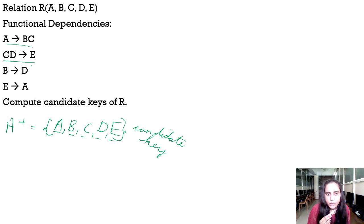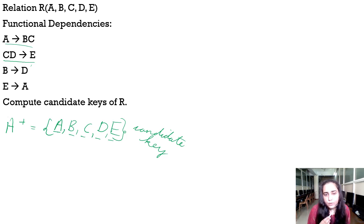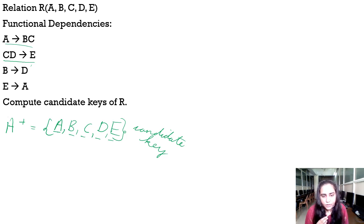When you get a candidate key with a single attribute, you no longer need to compute pairs like A,B+ or A,C+. However, you cannot stop entirely — you still have to calculate B+, C+, D+, and E+ individually to check whether any other single-attribute candidate keys exist.